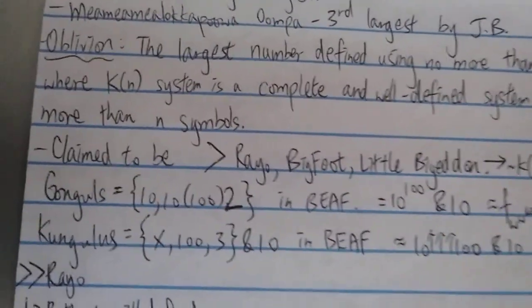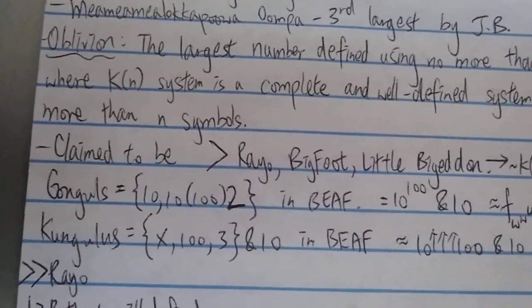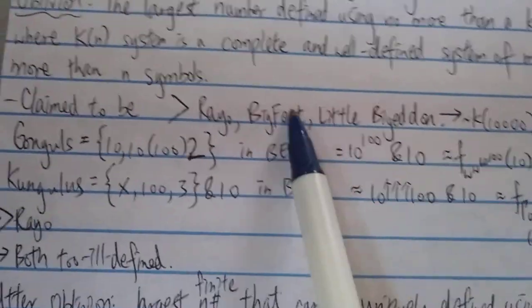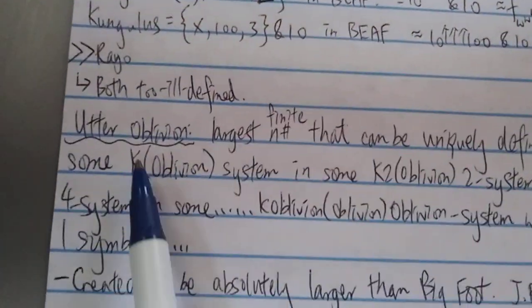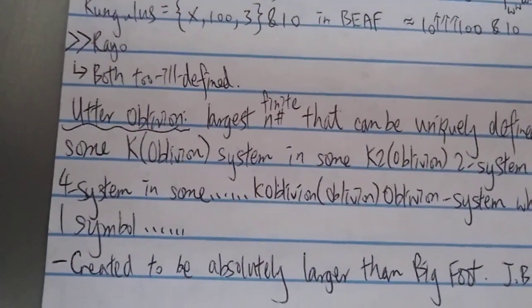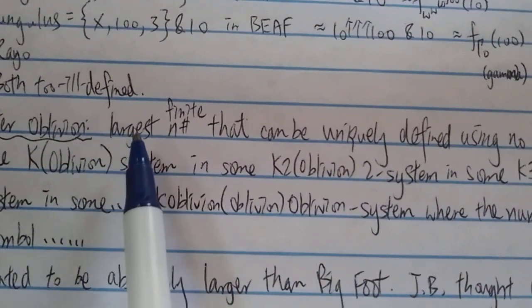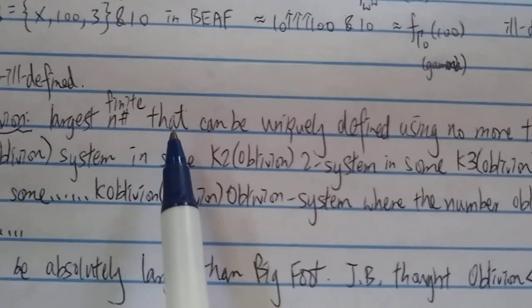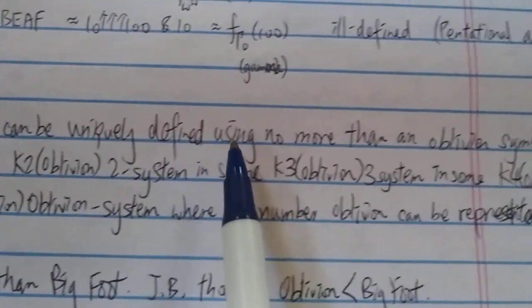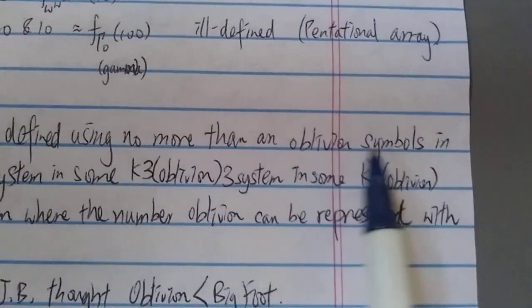But however, if it's well-defined then it's way, way, way bigger than Rayo's number or even these two numbers. So what about the utter oblivion? Well, it's basically an extension of the oblivion. Basically, what this definition is: it's the largest finite number that can be uniquely defined using no more than an oblivion symbols.